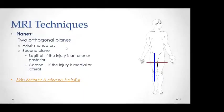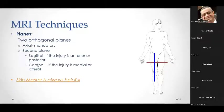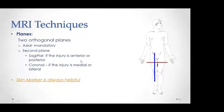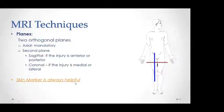For imaging planes, the axial plane is always mandatory in all musculoskeletal injuries. The second orthogonal plane can be sagittal or coronal depending on where the pathology is. If the pathology is anterior or posterior, we use a sagittal plane; if medial or lateral, we use a coronal plane. I always advise technologists to place a skin marker where the pathology is, especially for chronic injuries where fluid may not be present.